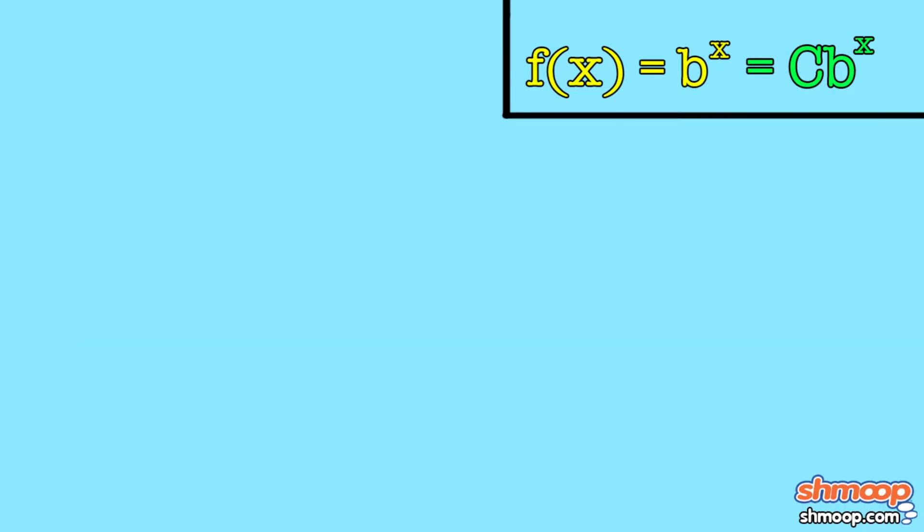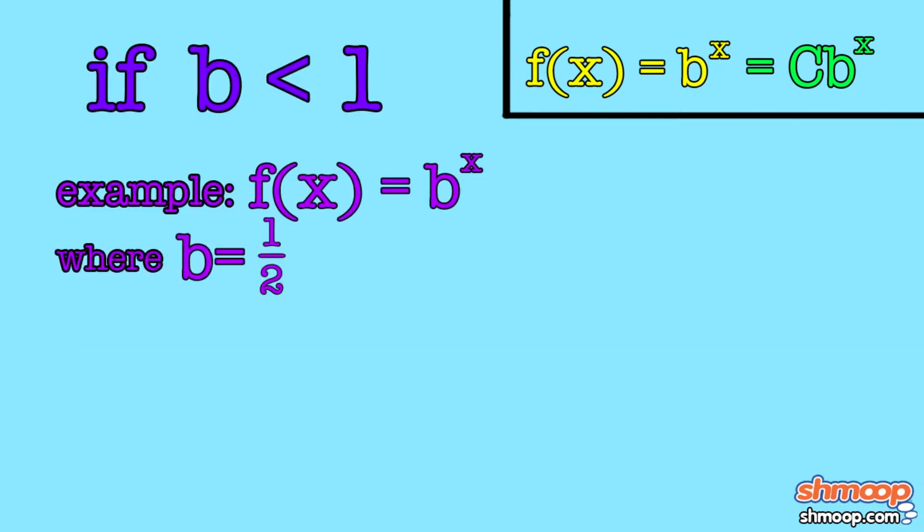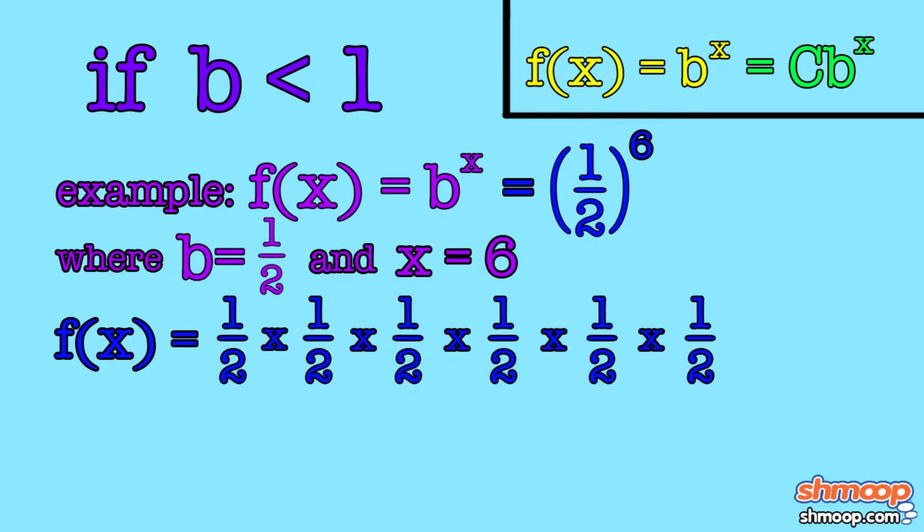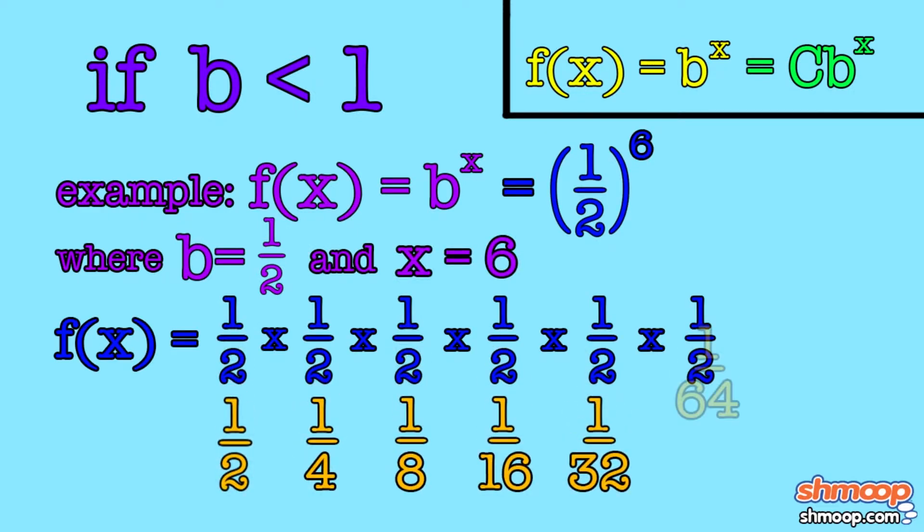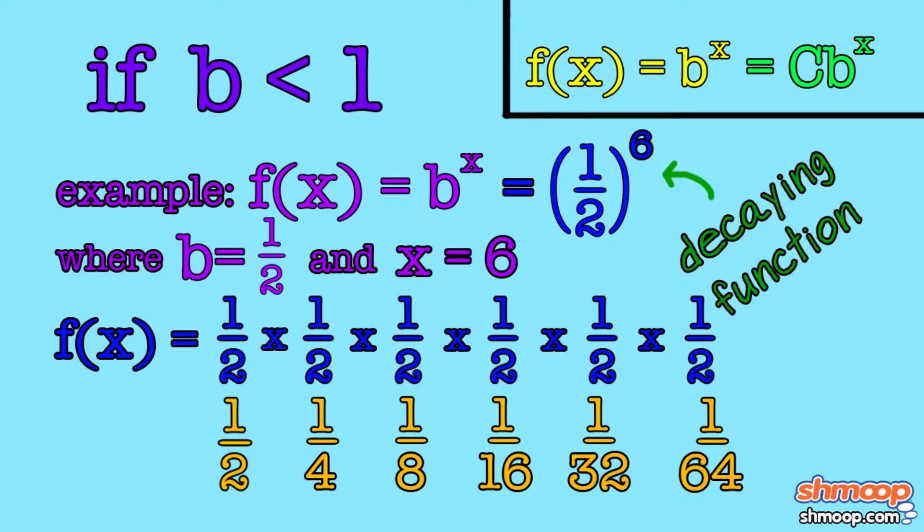If on the other hand, it's smaller than 1, then multiplying it by itself is just going to keep shrinking, resulting in a decaying function.